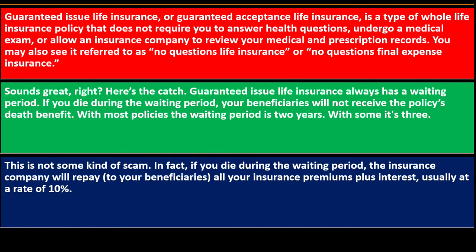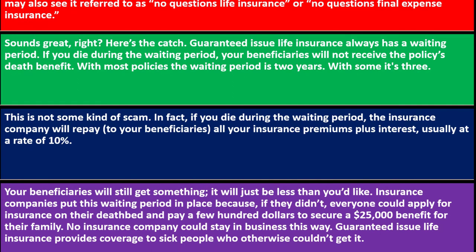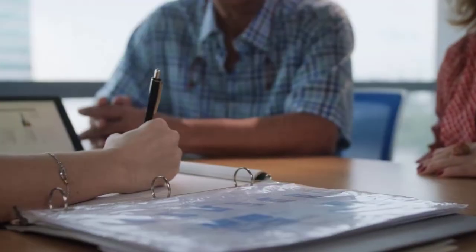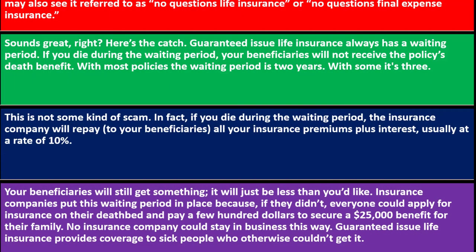Insurance companies put this waiting period in place because if they didn't, everyone could apply for insurance on their deathbed and pay a few hundred dollars to secure a $25,000 benefit for their family. No insurance company could stay in business that way. Guaranteed issue life insurance provides coverage to sick people who otherwise couldn't get it.